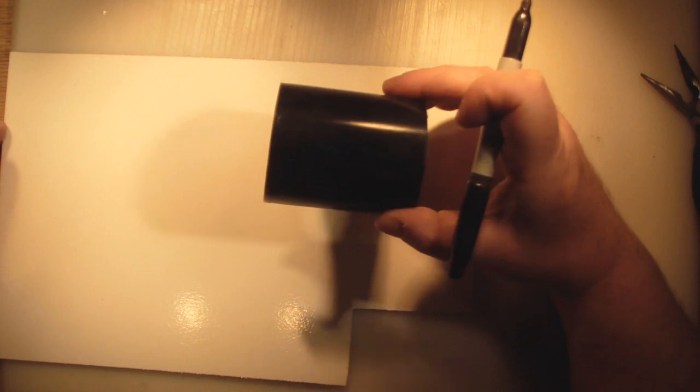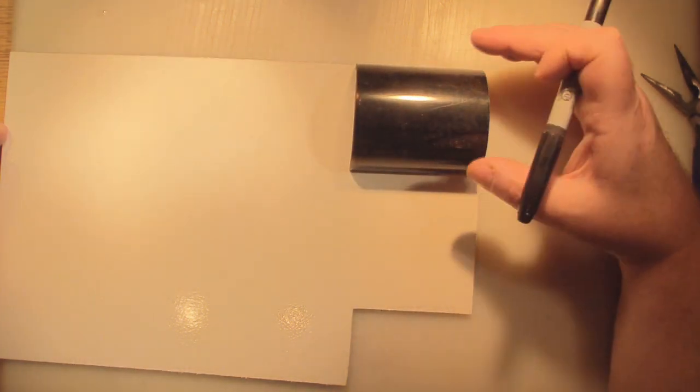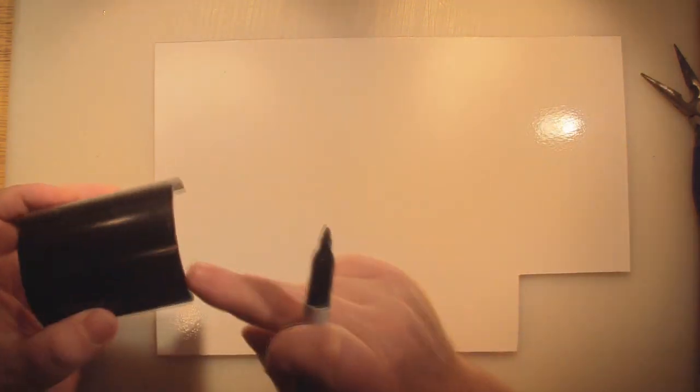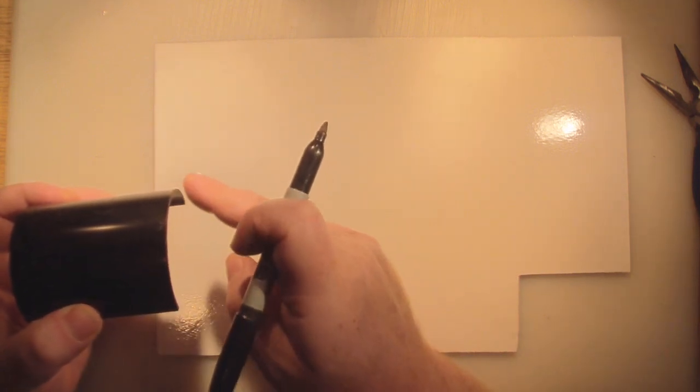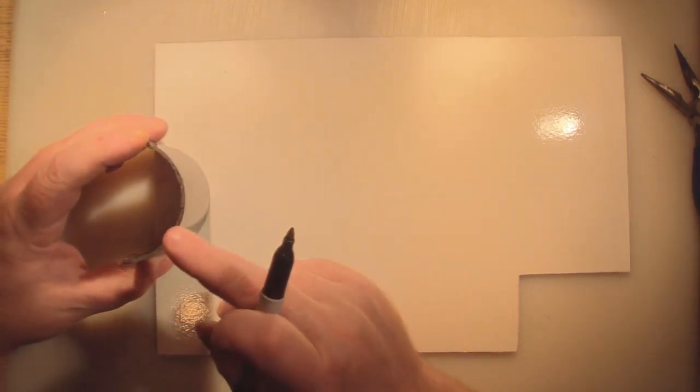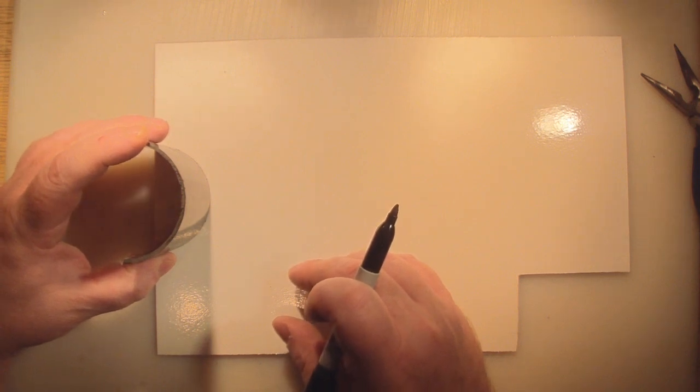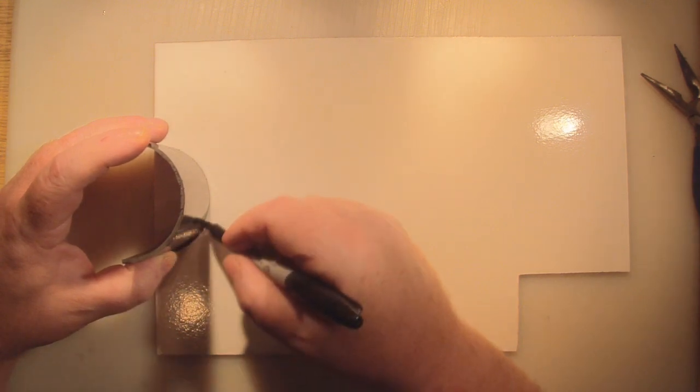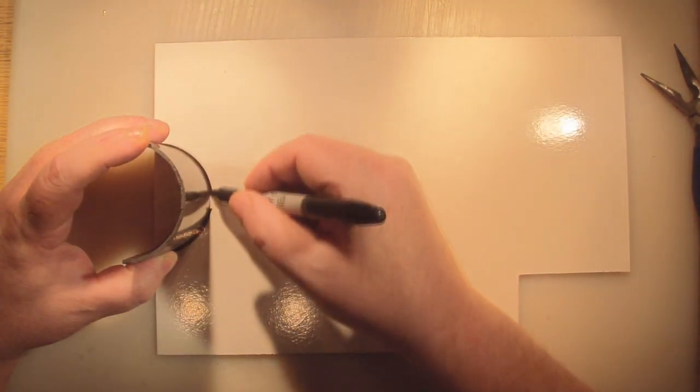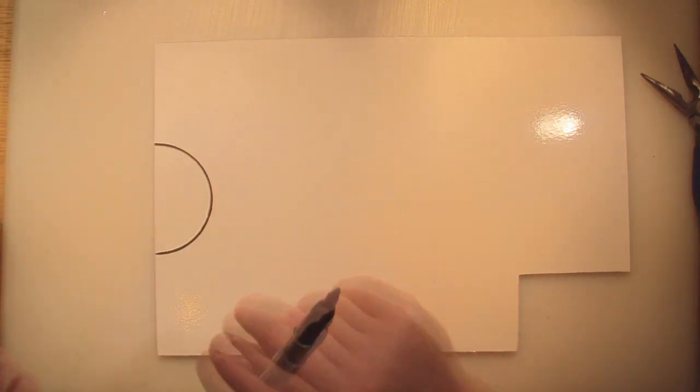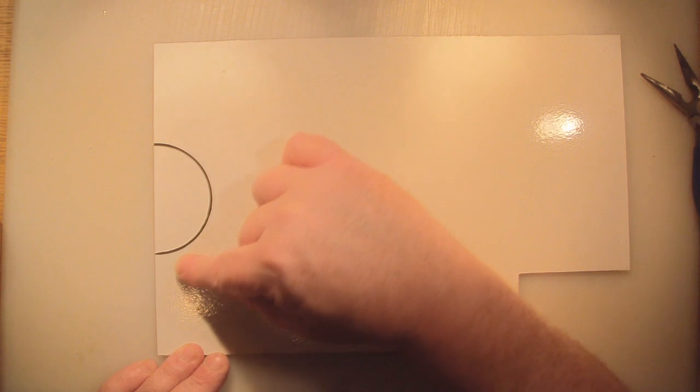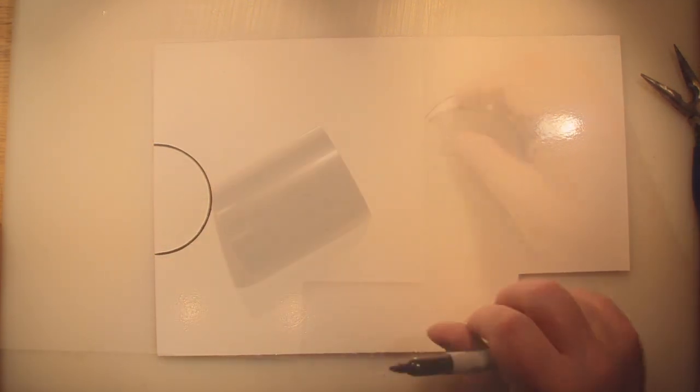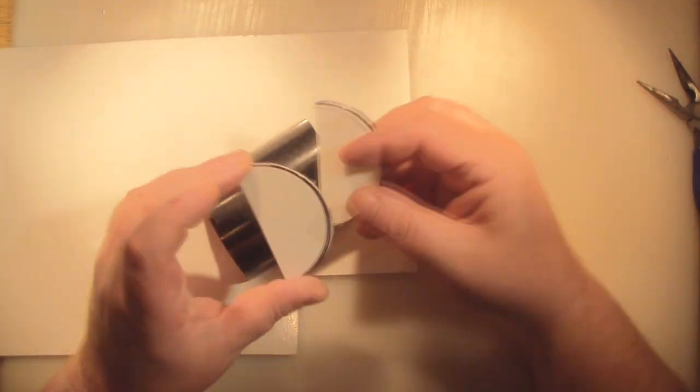Now we've got this cut out, we can use this as a template to cut out our back reflector. Before we do that, we want to mark out these curves for the edges. Just place it on whatever material you've chosen and draw the curve around, then go ahead and cut that out. You don't have to be that accurate - I've used a jigsaw to cut mine out, but just make sure you stay on this side of the black line.